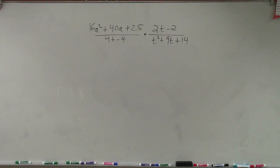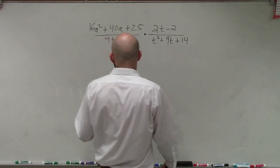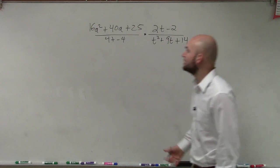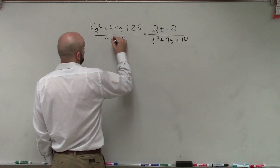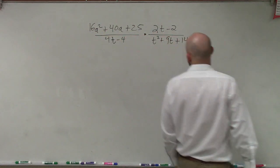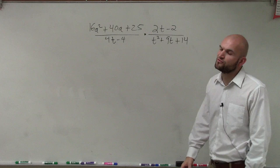Who doesn't like factoring? So we have 16a squared plus 40a plus 25 divided by 4t minus 4 times 2t minus 2 divided by t squared plus 9t plus 14.